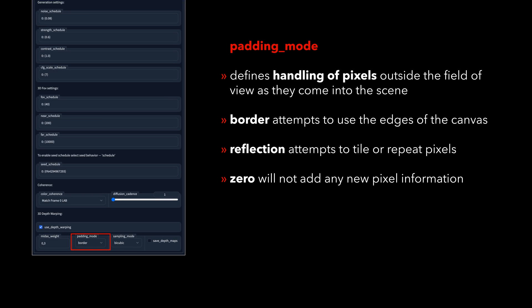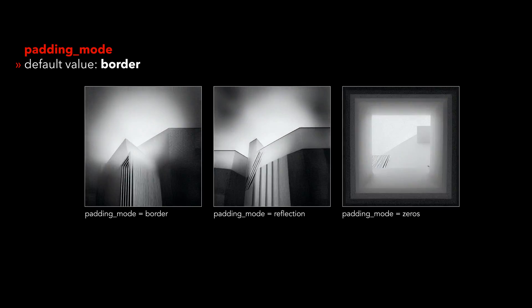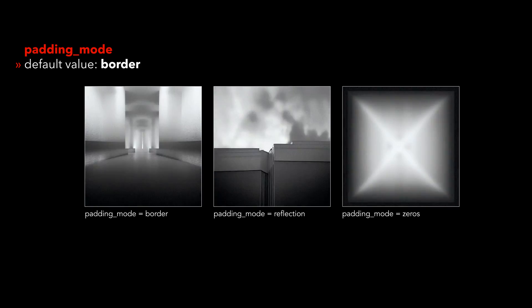Padding mode instructs the handling of pixels outside the field of view as they come into the scene. Reflection will attempt to approximate the image in tile or repeat pixels, whereas zeros will not add any new pixel information.